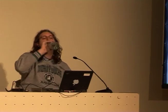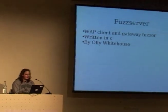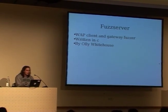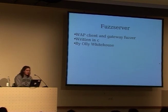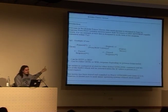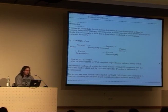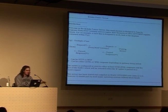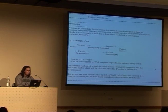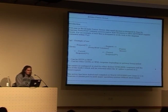The next tool is a Fuzz Server, written by another guy from @stake/Symantec. It's basically a gateway web client fuzzer — also written in C, open source, made for Windows. It's got cool ASCII diagrams explaining how it works: you've got your web client, web proxy, and fuzz server. The fuzz server does very trivial HTTP or WAP fuzzing. I guess that kind of fuzz set is somewhat outdated these days, but I've been told by a couple of people that this tool used to be used a lot, so I included it.